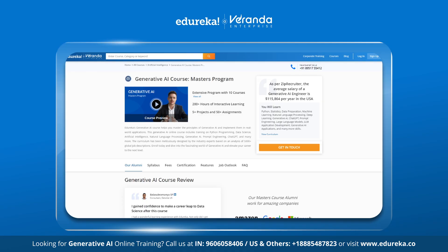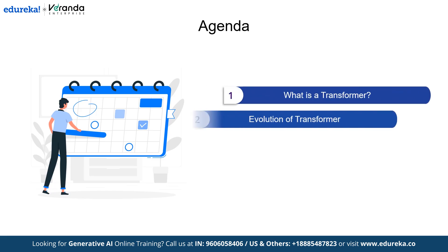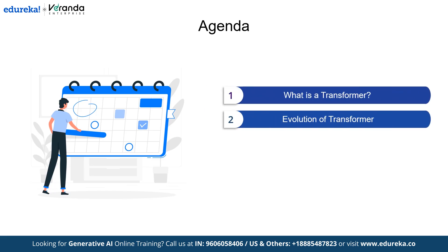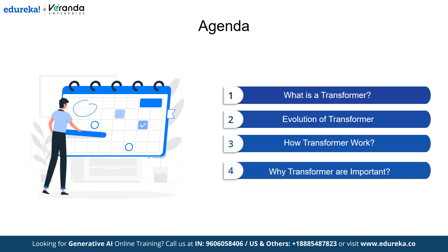Now, to uncover the magic of transformers, let's break down this video through our agenda. We will start by explaining what a transformer is and how it evolved from earlier neural networks. Next, we will break down how the transformer architecture works, focusing on attention mechanisms and their role in processing data. Finally, we will discuss how transformers have transformed AI and their impact on various applications. By the end of this video, you will have a clear understanding of transformers and their importance in AI today. Let's get started.